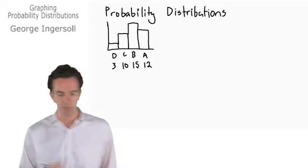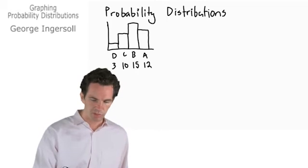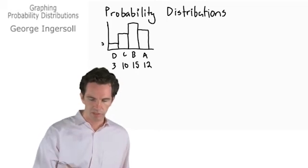So this is our frequency distribution. These numbers correspond to 3, 10, 15, and 12 right there.